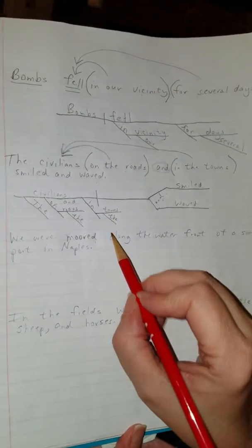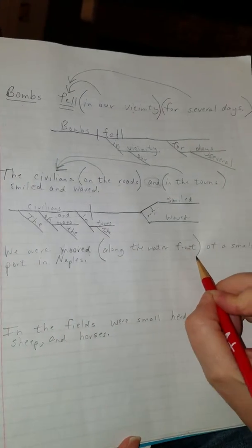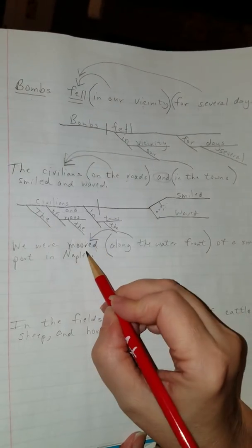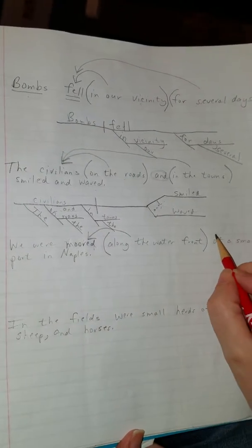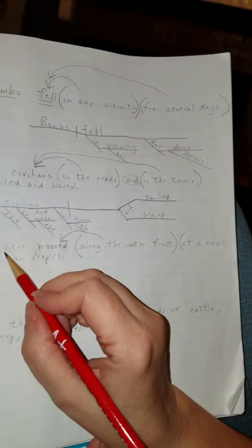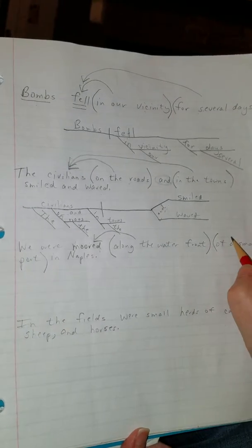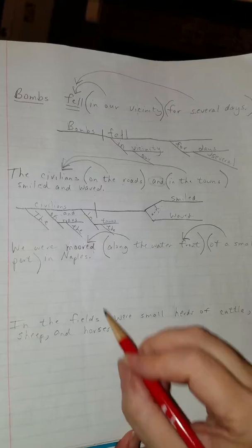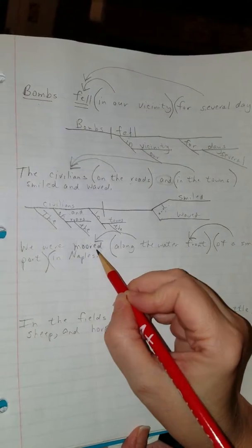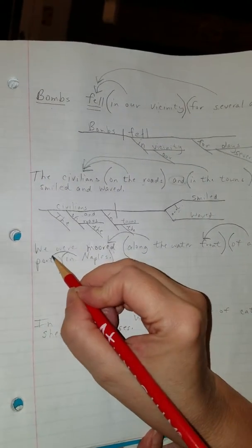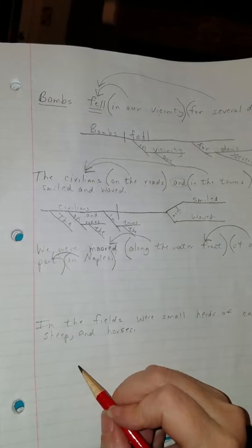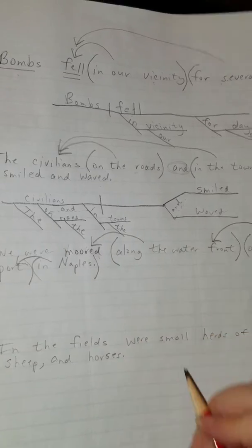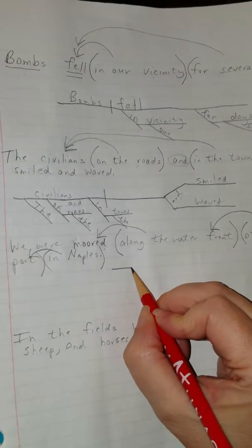So I have along the waterfront, which describes where we were moored. It describes the location of the action. Of a small port describes waterfront. In Naples describes the port. Exactly what I thought. A phrase describing a phrase describing a phrase. So this is going to be super long, but that's okay.